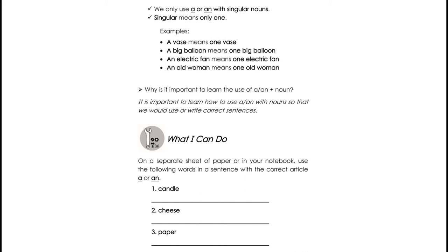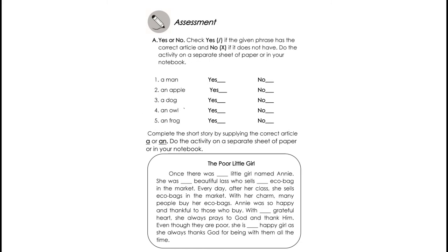Number 2: use the word cheese. Number 3: paper. Now answer. Check yes if the given phrase has the correct article, and no if it does not. A man — is it correct? Yes, so you check yes. Number 2: an apple. Number 3: a dog. Number 4: an owl. And Number 5: an frog.